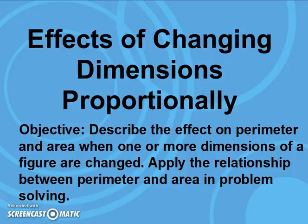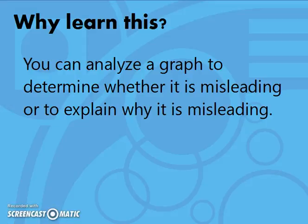Effects of changing dimensions proportionally. Our objectives are to describe the effect on perimeter and area when one or more dimensions of a figure are changed, as well as apply the relationship between perimeter and area in problem solving. Why learn this? You can analyze a graph to determine whether it is misleading or to explain why it is misleading.